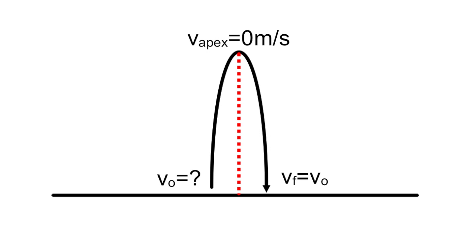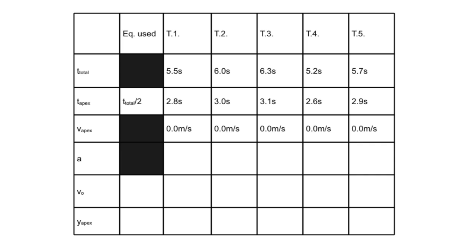Step 3: In one-dimensional kinematics, the velocity is 0 meters per second at the apex of flight. An example of the data table can be seen here.